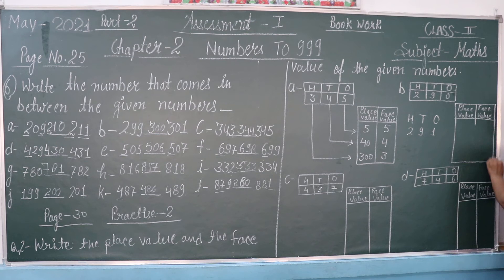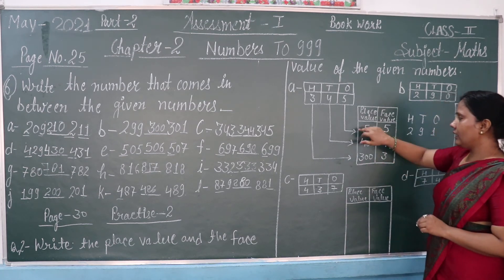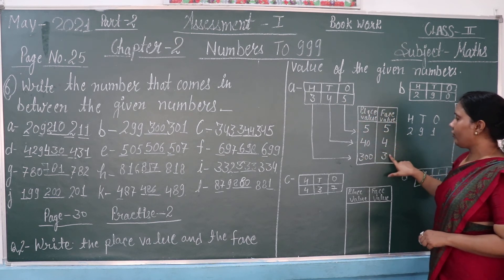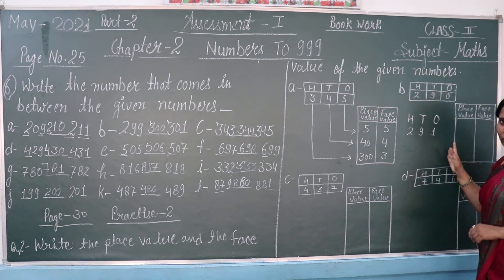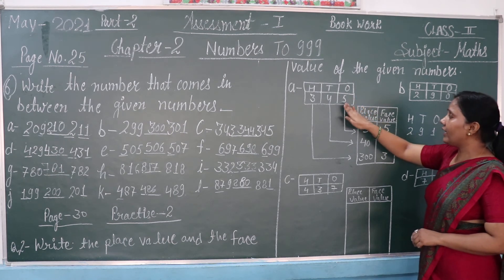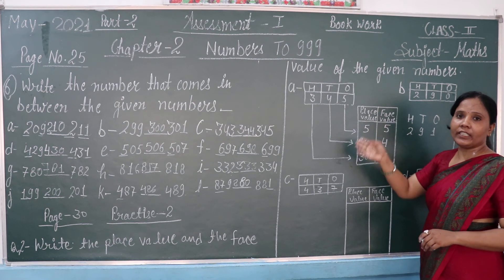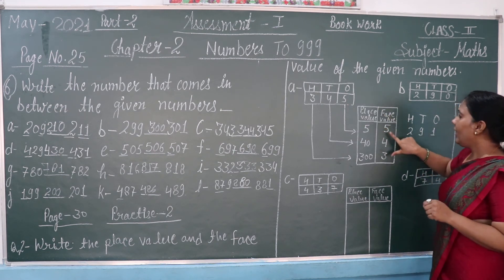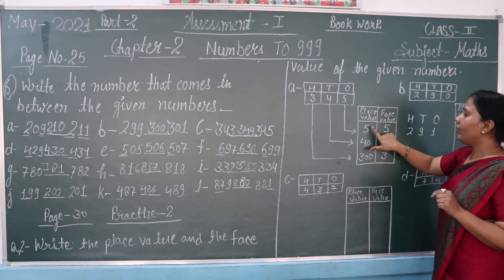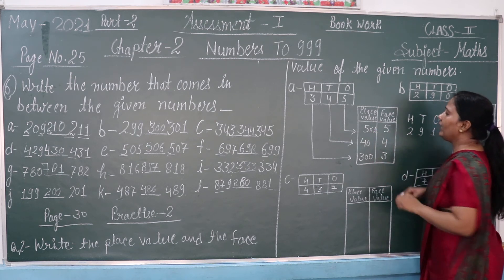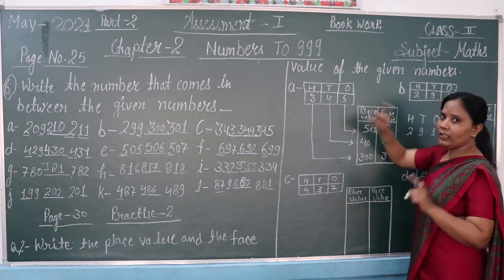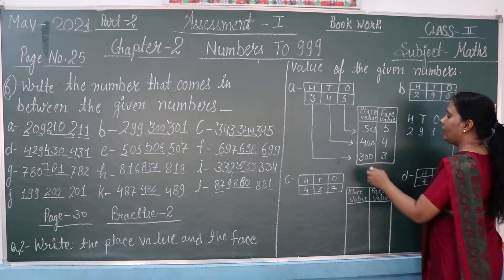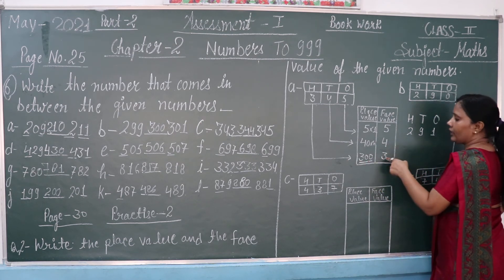Now we will find face value and place value. Face value is simply the digit as it is. For example, take the number 345. The face value of 5 is 5, and its place value is 5 × 1 = 5. The face value of 4 is 4, and its place value is 4 × 10 = 40. The face value of 3 is 3, and its place value is 3 × 100 = 300.